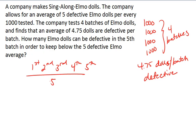We know that we want this average value to be less than 5. Well, the first four batches have an average of 4.7.